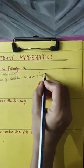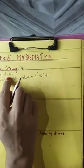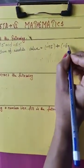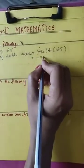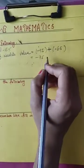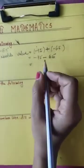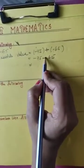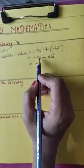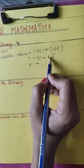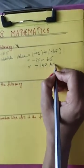We are adding minus 75 plus minus 65. Open the bracket: plus minus is minus. Minus minus is plus, but the overall sign will be minus. So you add 75 plus 65 equal to 140, and your answer will be minus 140.